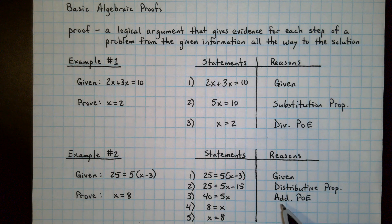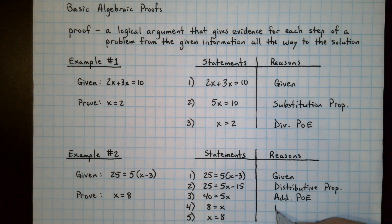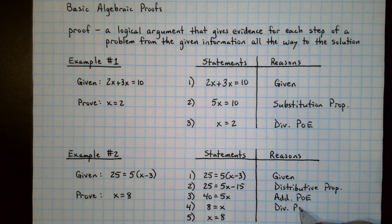And as a side note, the addition property of equality and the subtraction property of equality are interchangeable when it comes to the reasons for a proof. Multiplication and division work the same way. They're both interchangeable as well. If we divide by 5 here, that would be the division property of equality.